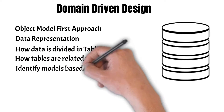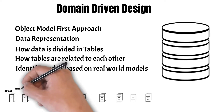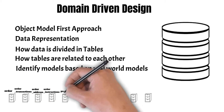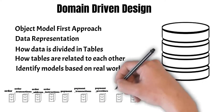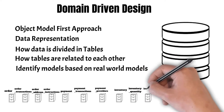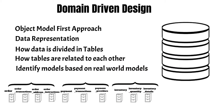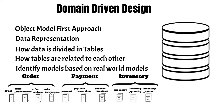Then we try to identify domain models based on real world models. Suppose we had these tables in our database: order, order transaction, order address, order instruction, payment, payment transaction, payment providers, inventory, inventory quantity, inventory details. Based on the above, we can clearly identify three domain models: order, payment, and inventory.